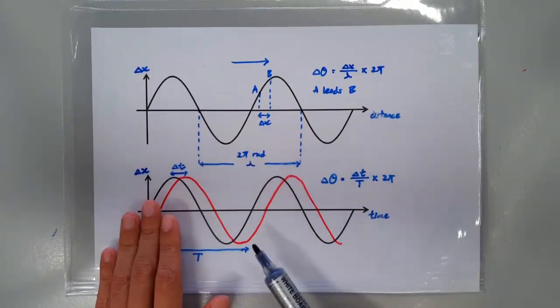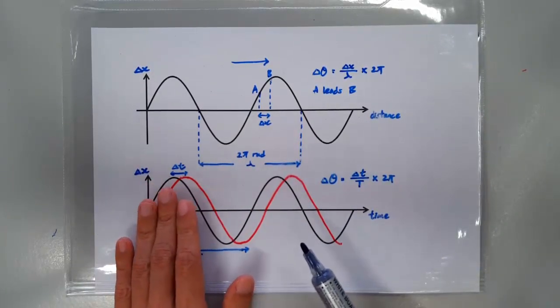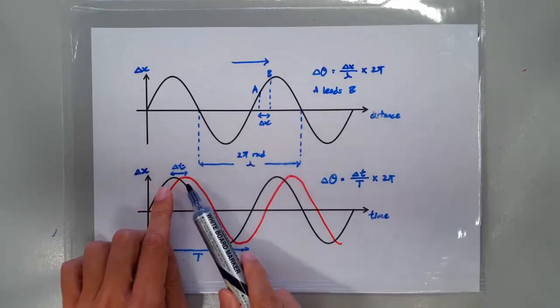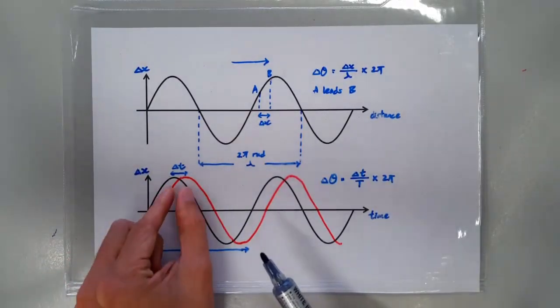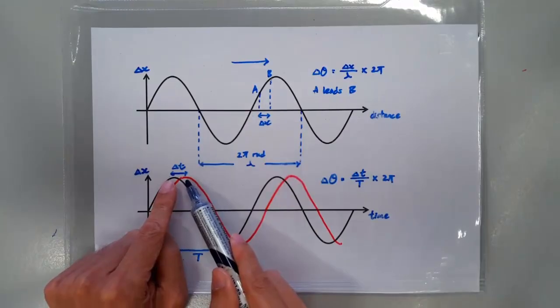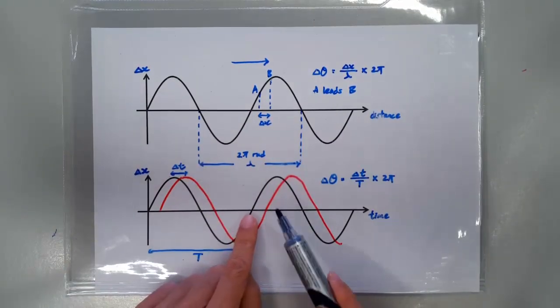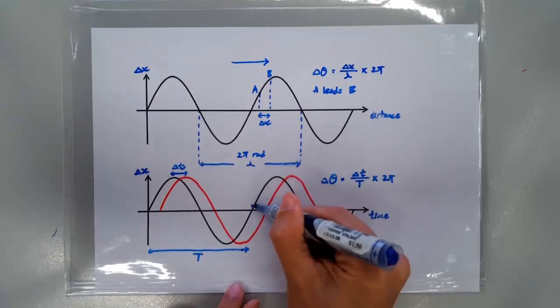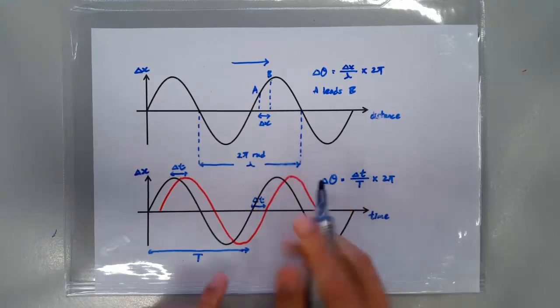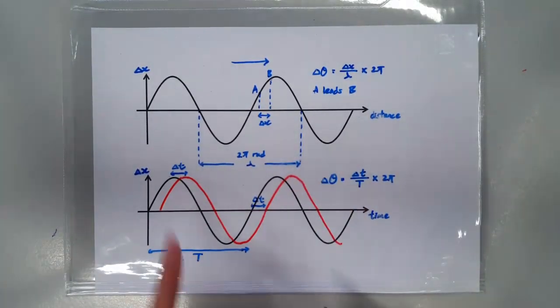And for Δt, you can obtain that by just checking the misalignment between two corresponding points on the two curves. So, it could be the two maximum points, or maybe between the two zero crossings here. So, any two corresponding points, you'll be able to figure out what is Δt.